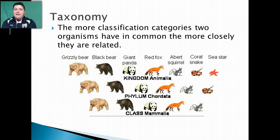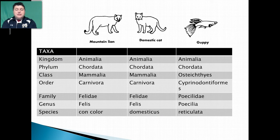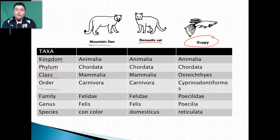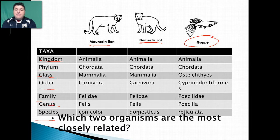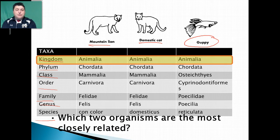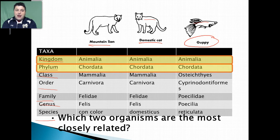The idea is the more groups that you have in common, the more closely related you're going to be. Looking at our groupings, we can see that our mountain lion and our domestic cat definitely look a lot alike, so they're probably closely related — a lot more so than to the guppy, and this will be reflected in classification. They're all animals — multicellular eukaryotic heterotrophs with no cell wall. The phylum is Chordata; they all have a dorsal nerve cord encased in vertebrae, so they're in the subphylum Vertebrata.